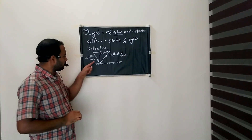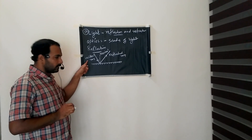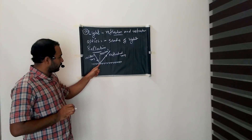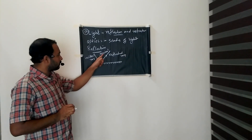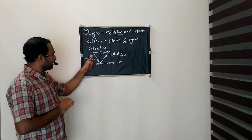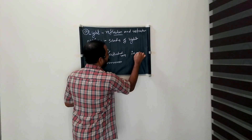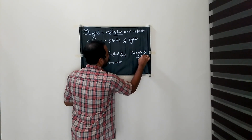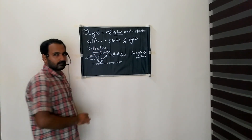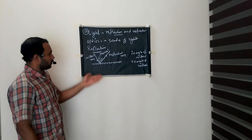So there are three key terms. Number one: incident ray means when a light falls on a smooth surface, that ray is called the incident ray. Then it reflects — that ray is called the reflected ray. A ray drawn from the point of incidence perpendicular to the surface is called the normal. The angle between the normal and incident ray is called the angle of incidence, denoted by I. The angle between the normal and reflected ray is called the angle of reflection, denoted by R.